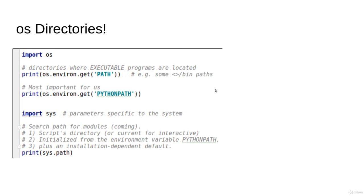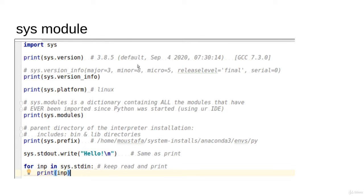A few other pieces of information about the sys module: you can call sys.version which returns, for example, 3.8.5; there is sys.version_info that returns version information in a separated format; sys.platform returns the platform, for example 'linux'; sys.modules is a dictionary of all module names and values ever loaded in your machine — it's typically very large and slow to print, so you rarely need it; and sys.prefix is the parent directory of the interpreter installation, containing the bin and library directories.